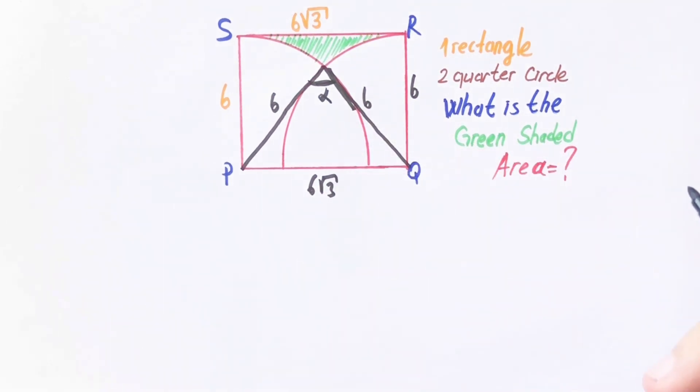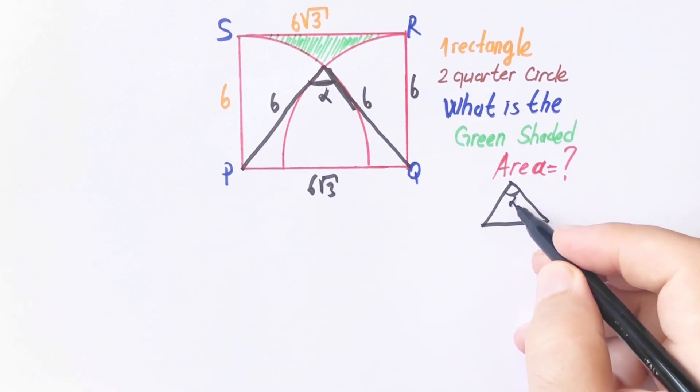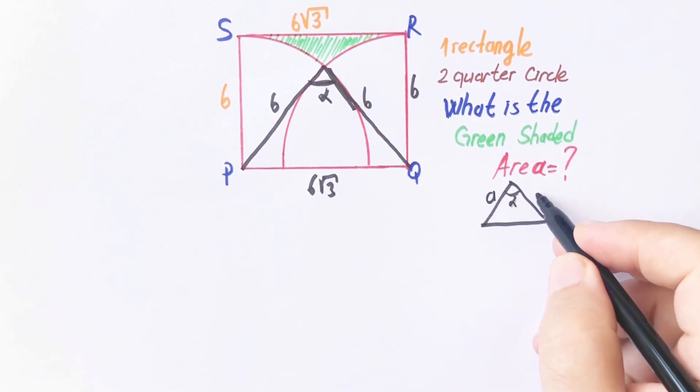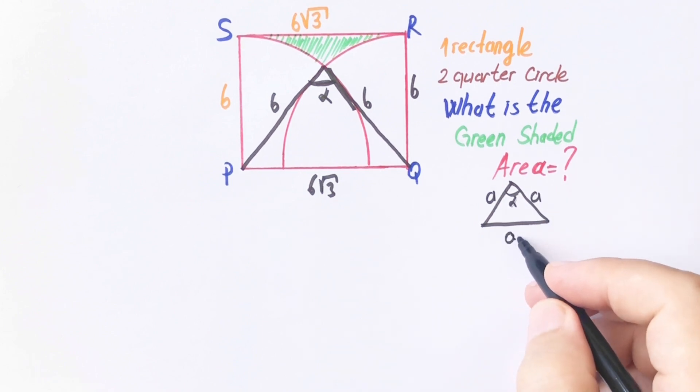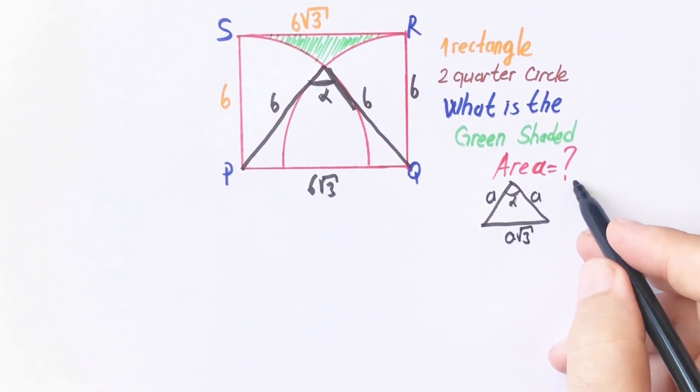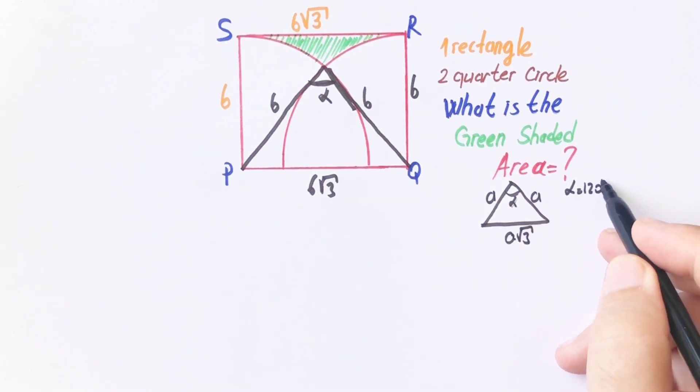This angle must be 120 degrees. Why? Let's remind you. Let's call this side a, this side a, and this a root 3. Alpha must be 120.